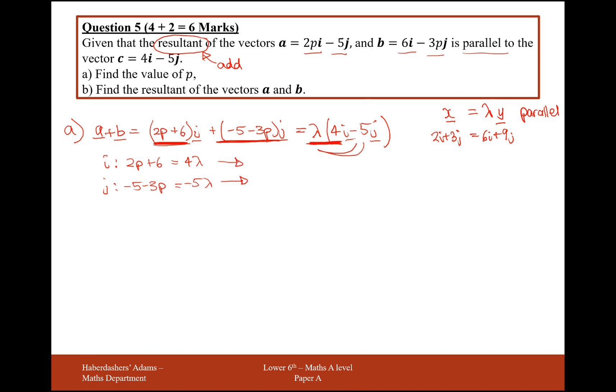So what I'm probably going to do is make 20 lambdas on the end here and set the two equal to each other. So multiplying the first equation by 5, I'm going to get 10p plus 30 equals 20 lambda. And I'm going to times this one by minus 4, so I'll get rid of the negatives and times it by 4. So that's going to give me 20 plus 12p equals 20 lambda.